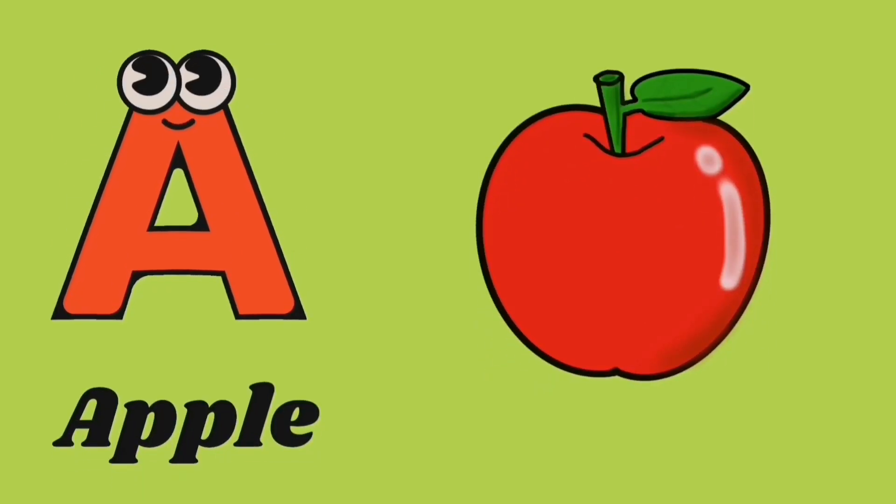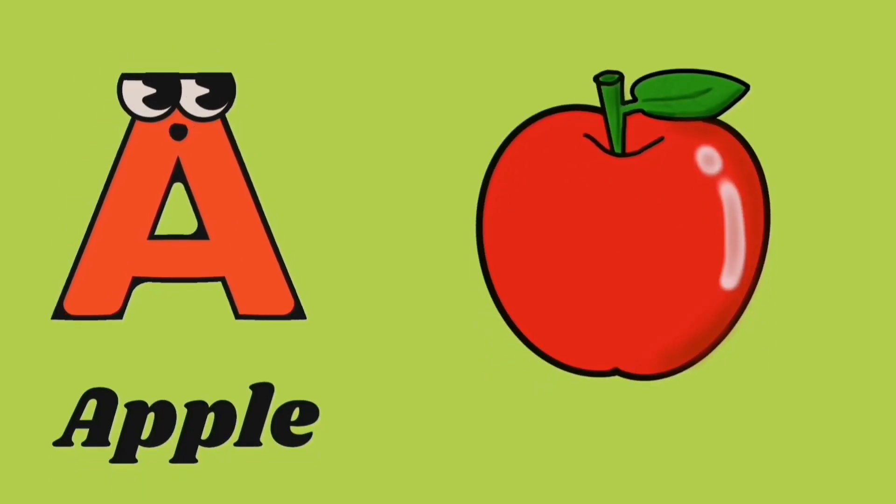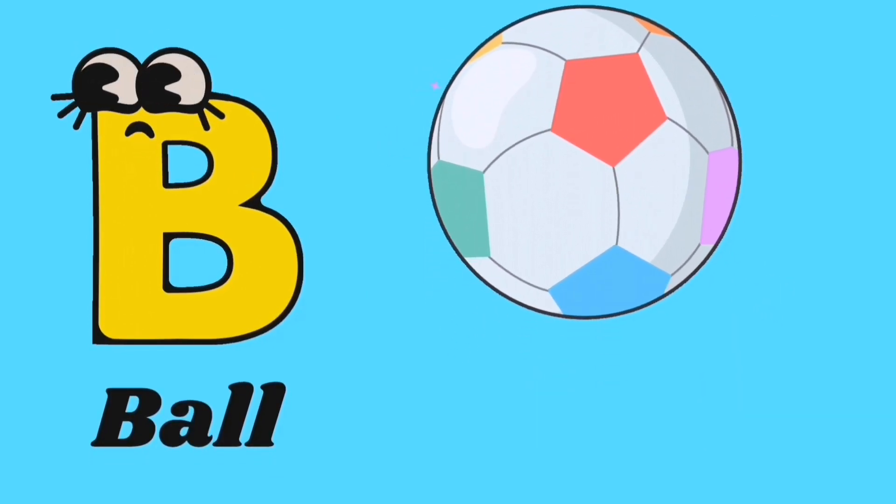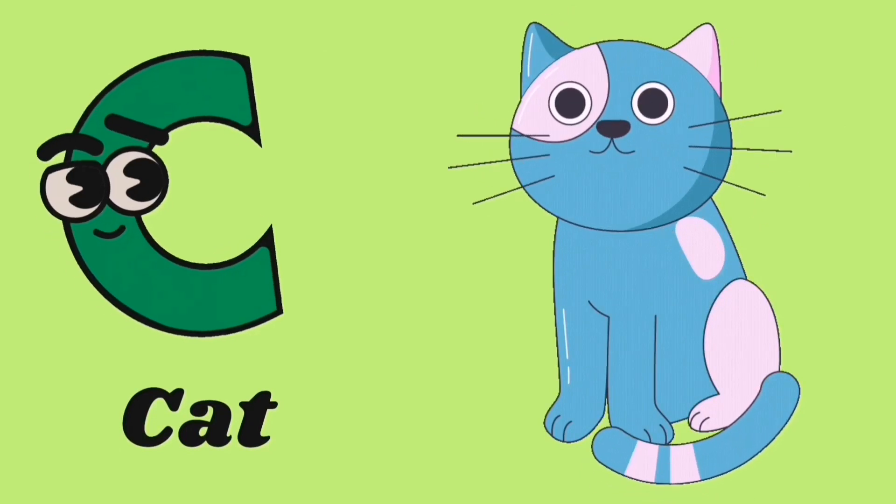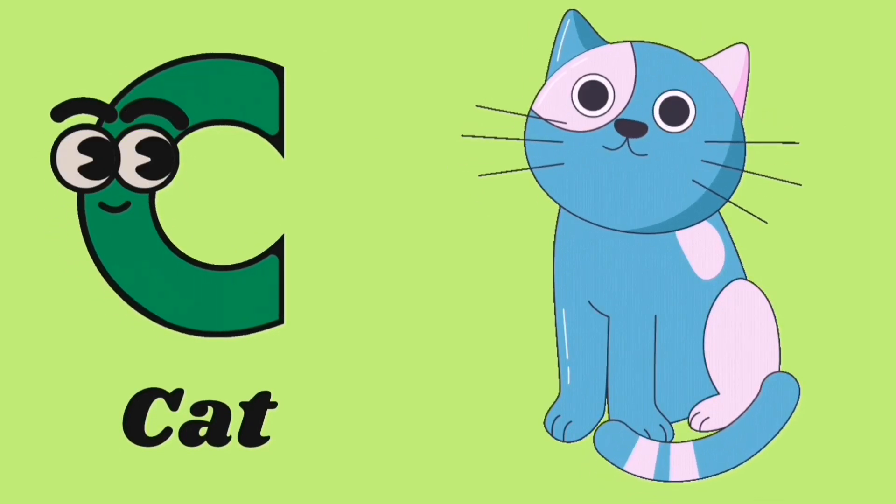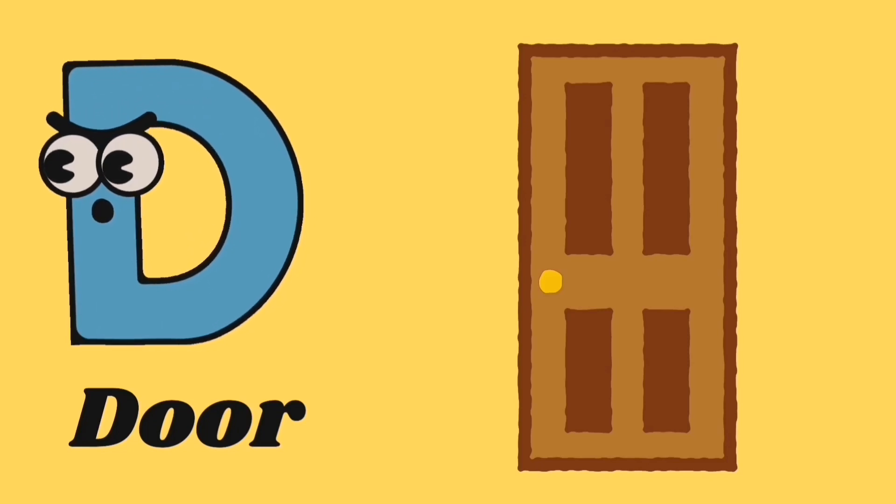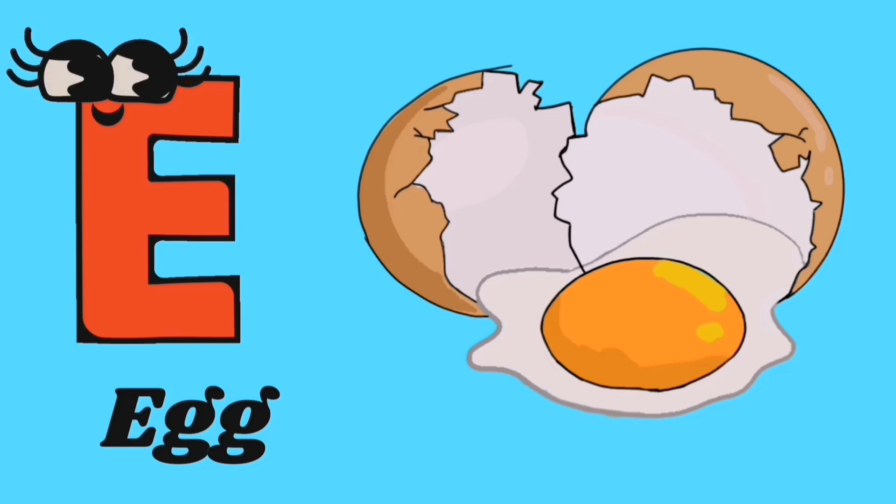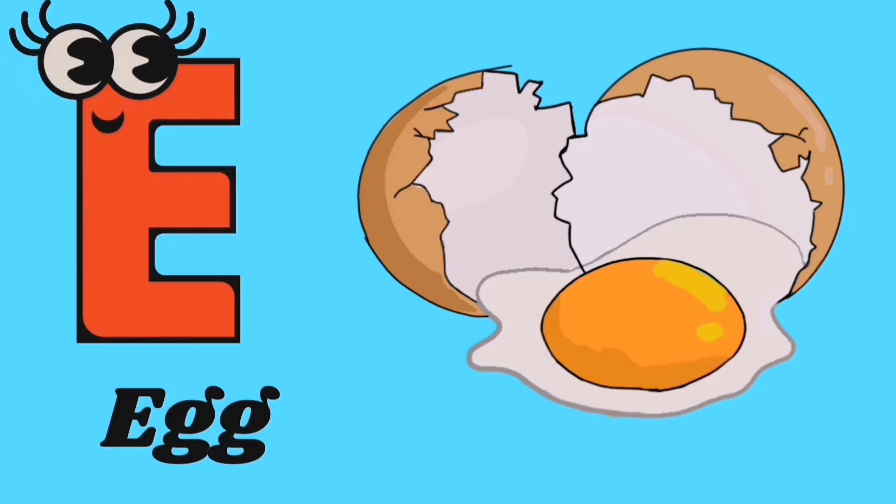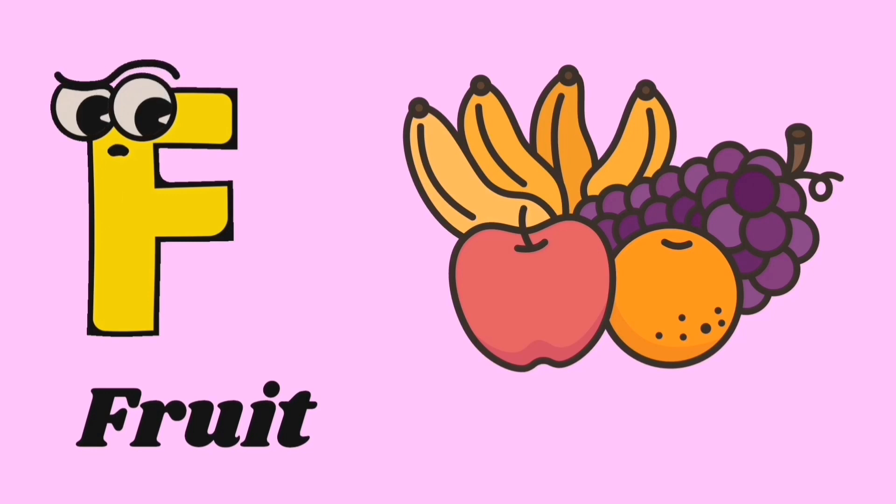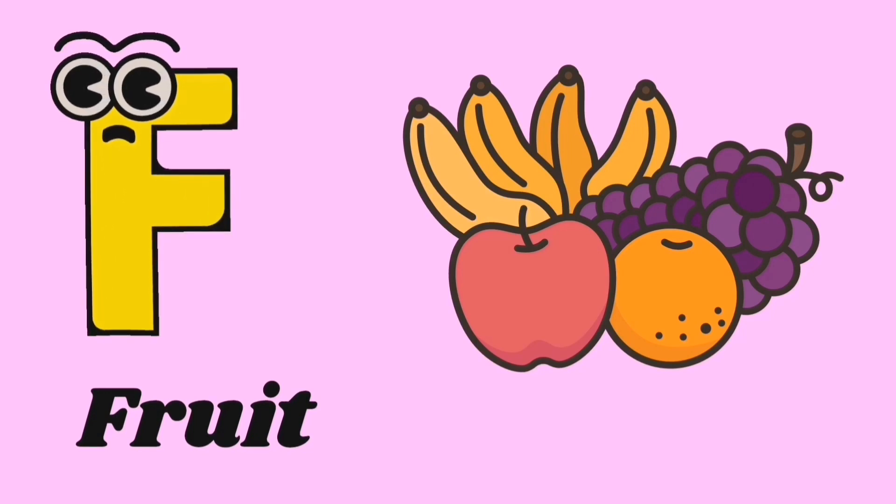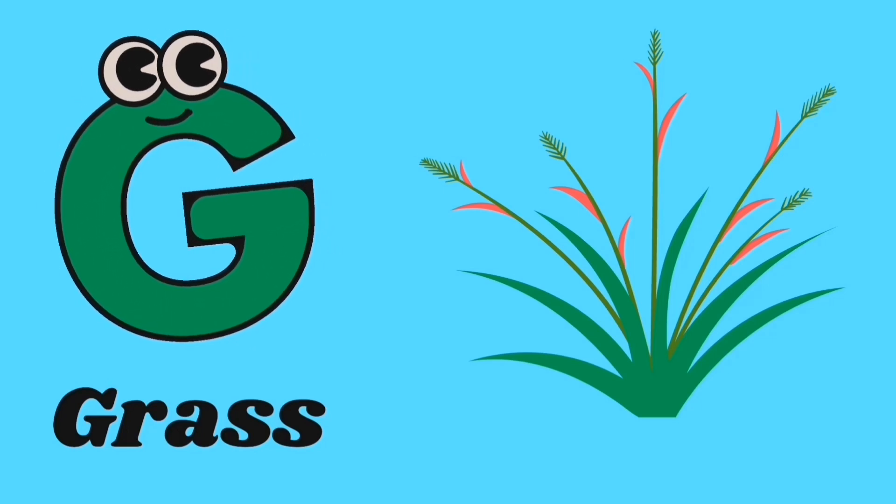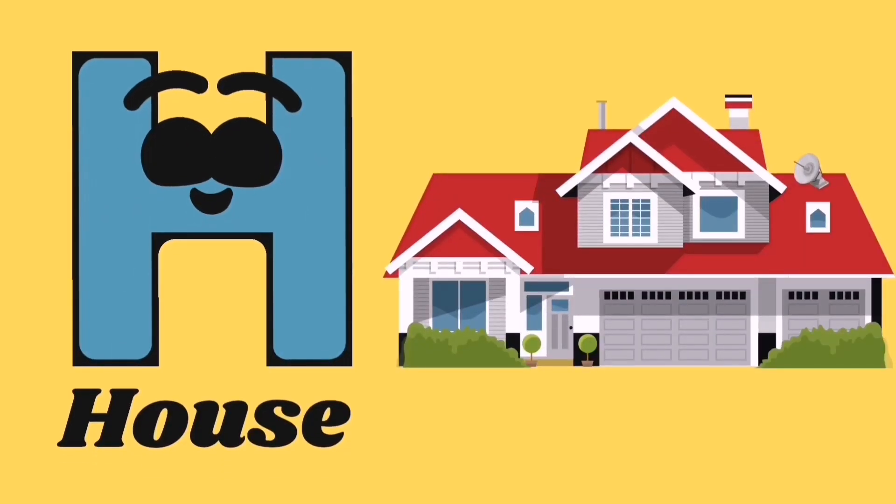A is for apple, B is for ball, C for cat, D for door, E for egg, F for fruits, G for grass, H for house.